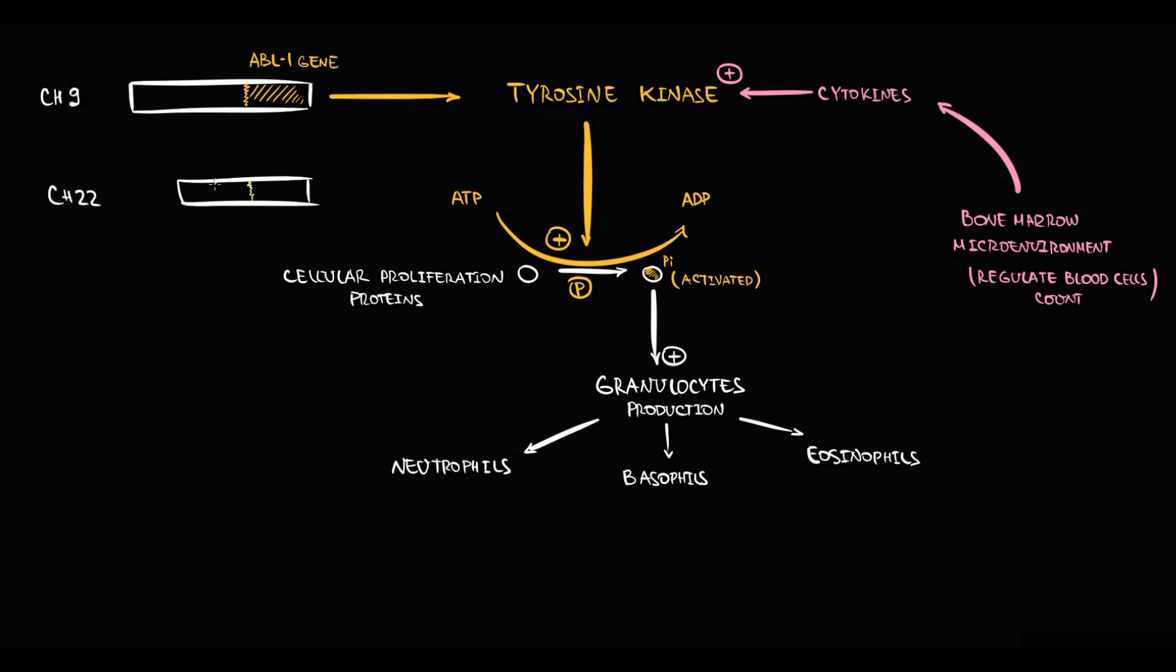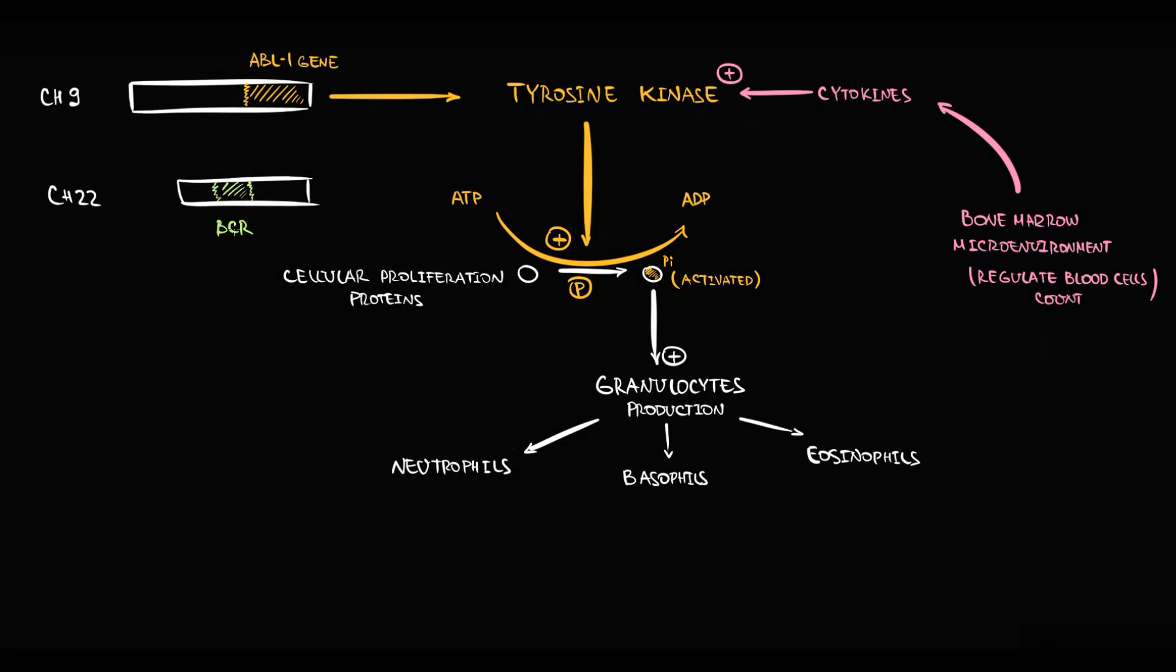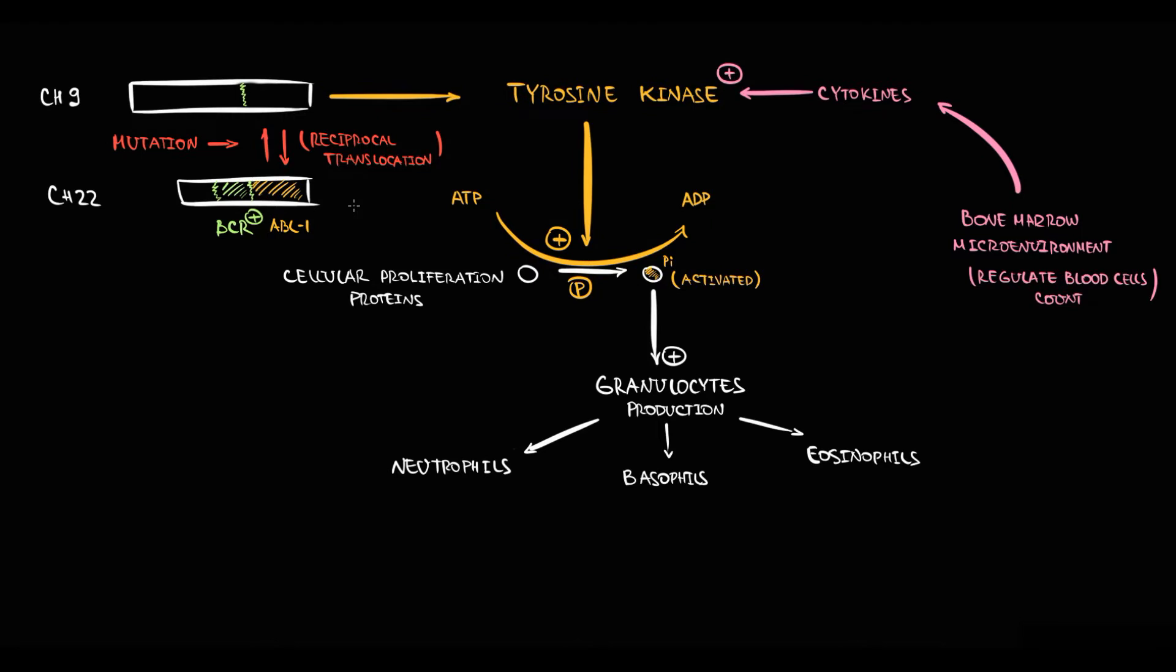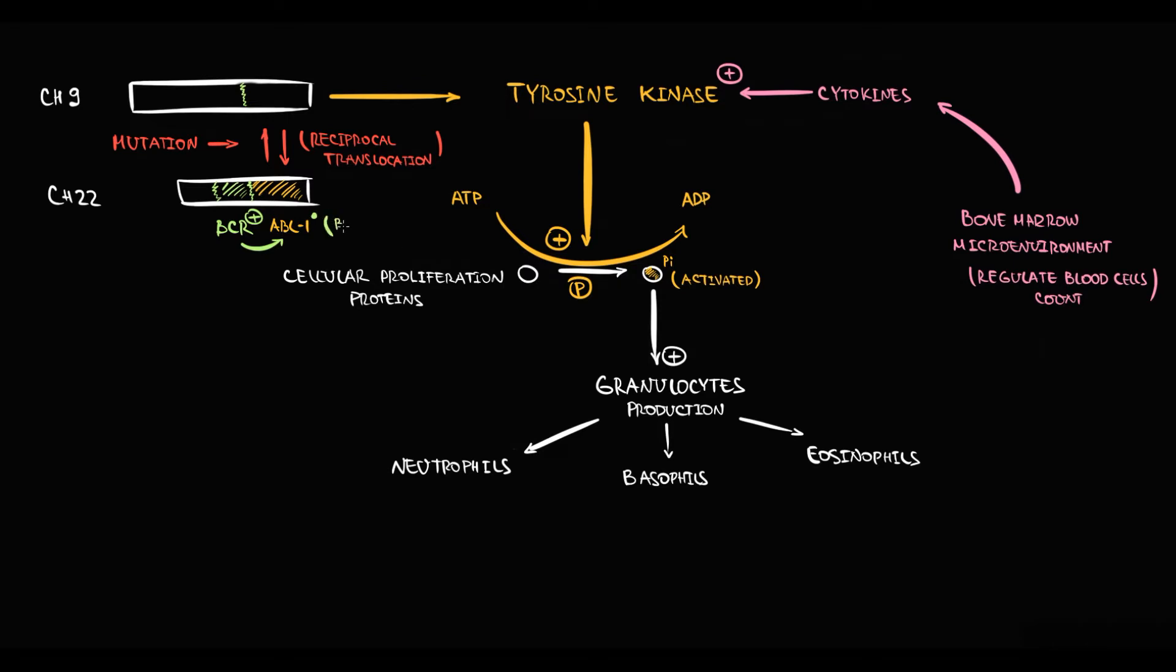But if mutation occurs that forces pathological crossover between chromosomes 9 and 22, the ABL1 gene from chromosome 9 will be translocated to chromosome 22 in exchange for a part of chromosome 22 region. This results in formation of a fusion gene called BCR-ABL1, where ABL1 has very high activity. Because ABL1 encodes tyrosine kinase, the higher the activity of ABL1 gene, the higher will be the activity of tyrosine kinase. So tyrosine kinase becomes constantly active.